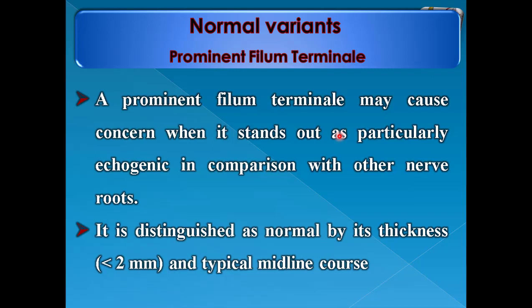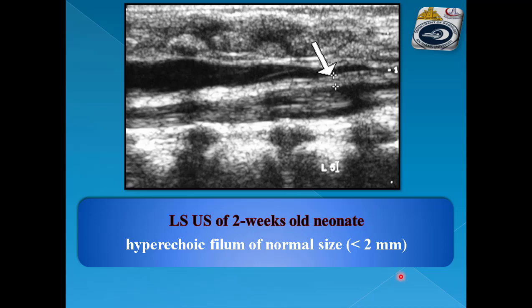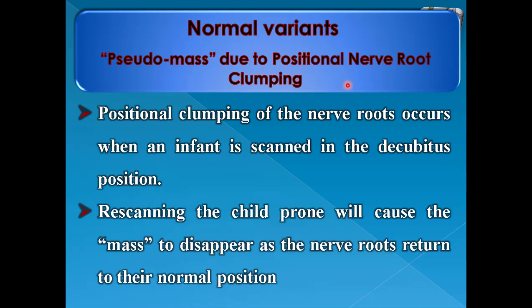Prominent filum terminale: a prominent filum terminal may cause concern when it stands out as particularly echogenic in comparison with other nerve roots. It is distinguished as normal by its thickness being less than 2 millimeters and typical midline course. This is a prominent filum terminale still within the normal range, being less than 2 millimeters in diameter, shown by LS ultrasound.